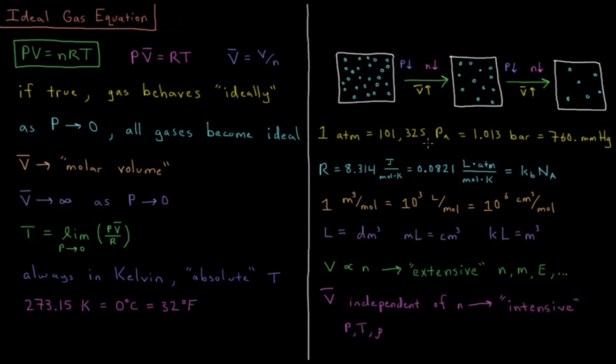Pascal is the SI unit of pressure. Pressure is force per unit area, so that's going to be newtons per meter squared. One pascal is one newton per meter squared, which is also equal to 1.01325 bar. So one bar is 10 to the fifth pascals.